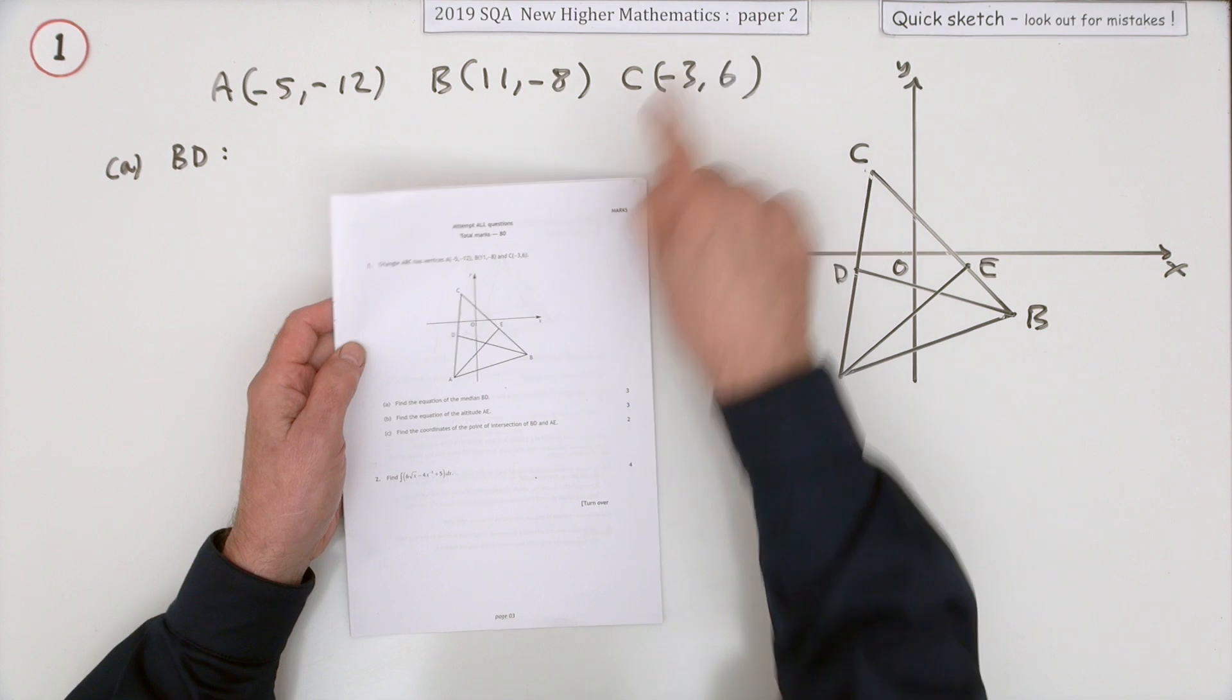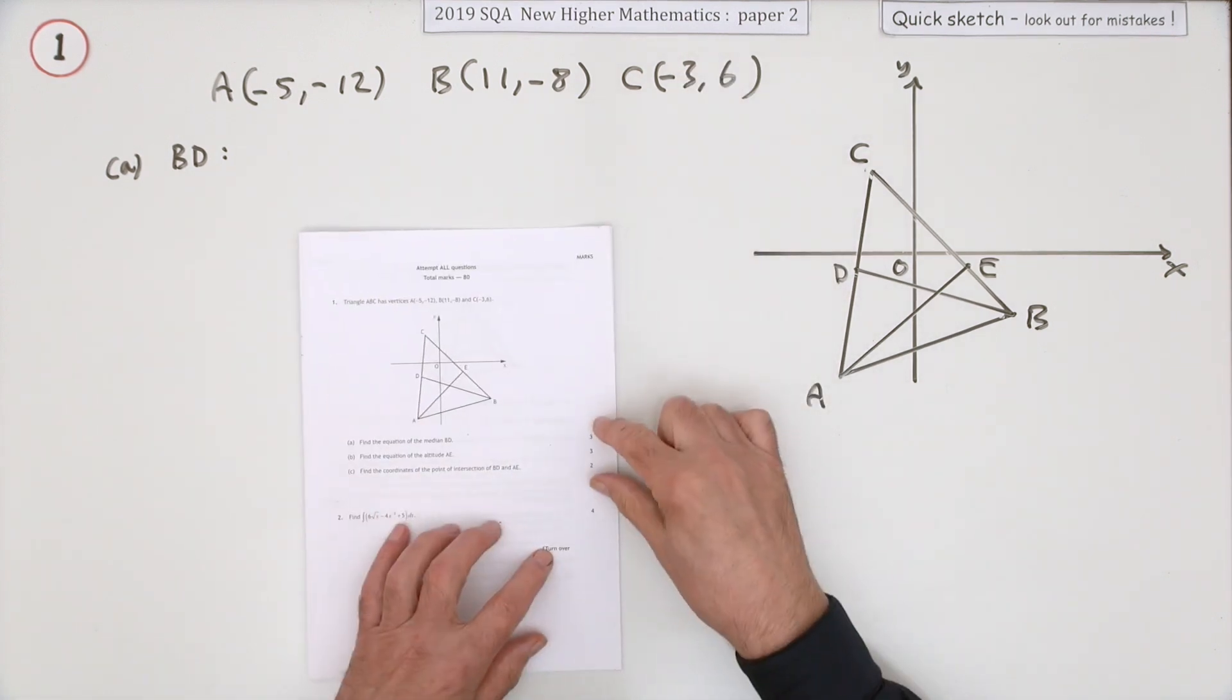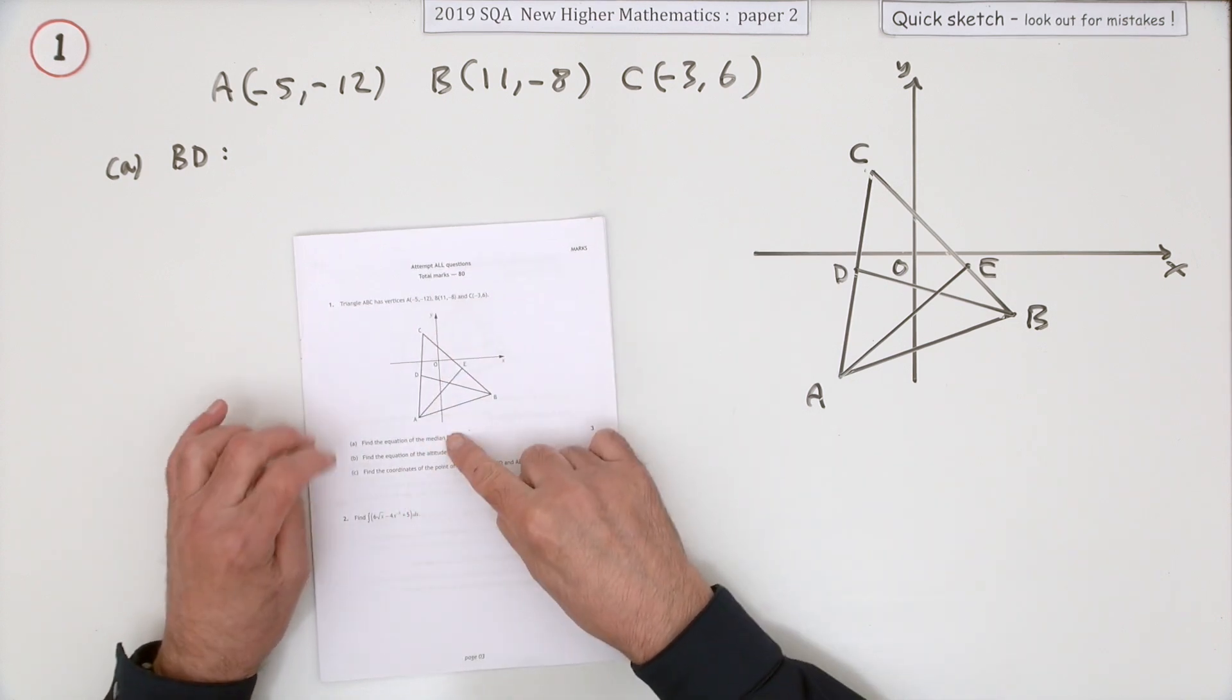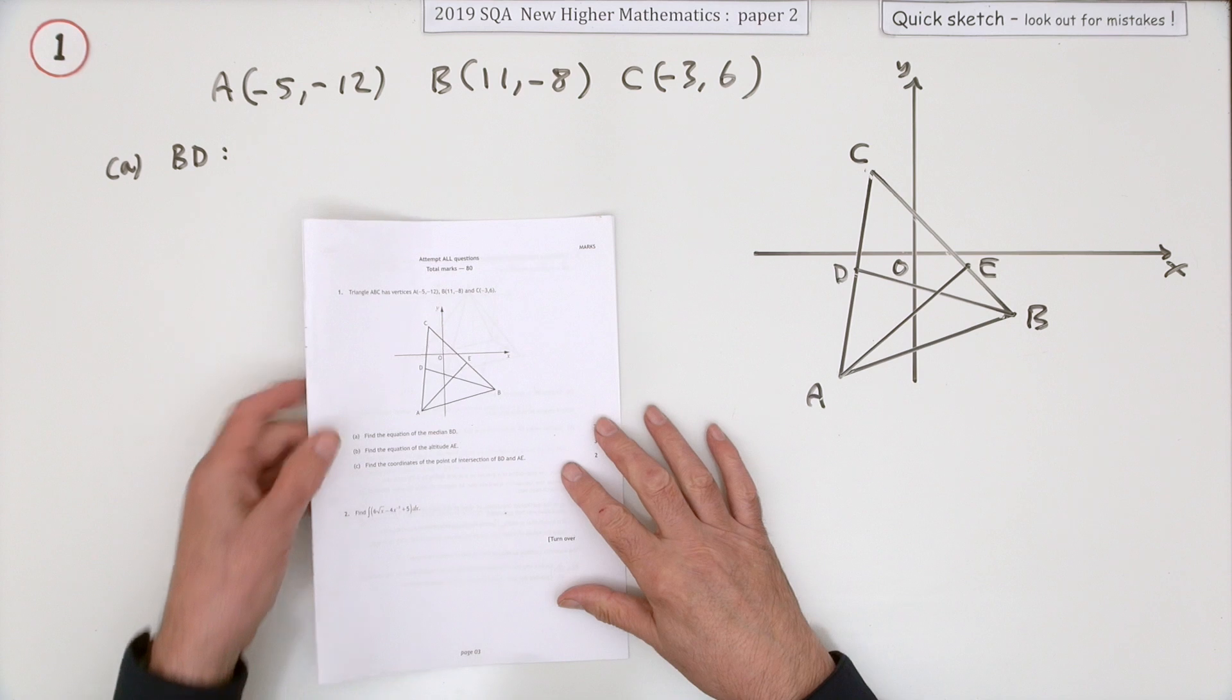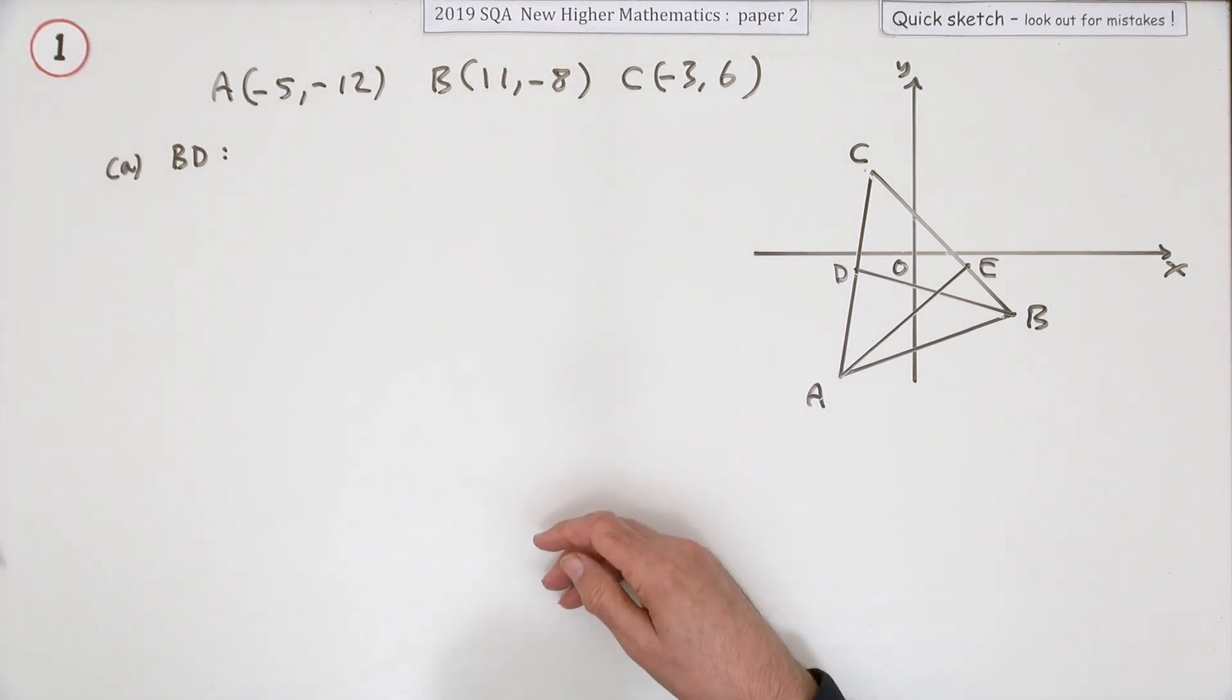Number one, the first question in paper two of the 2019 higher maths. Eight marks, and it's the lines in a triangle. Find the equation of one type of line, find the equation of another type of line, and find where they intersect.